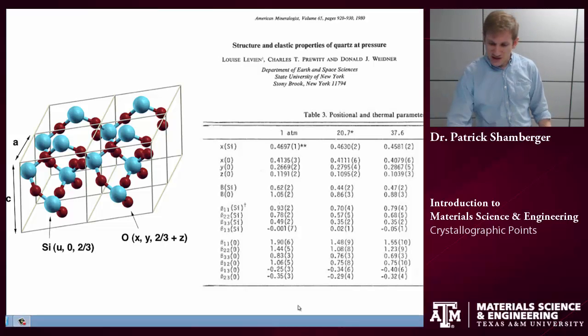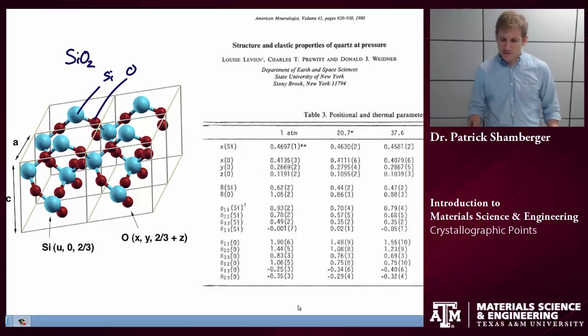What we have here is the structure of quartz, which is SiO2. We see some silicon atoms and we see some oxygen atoms. Now, any crystal lattice is made up of two things.